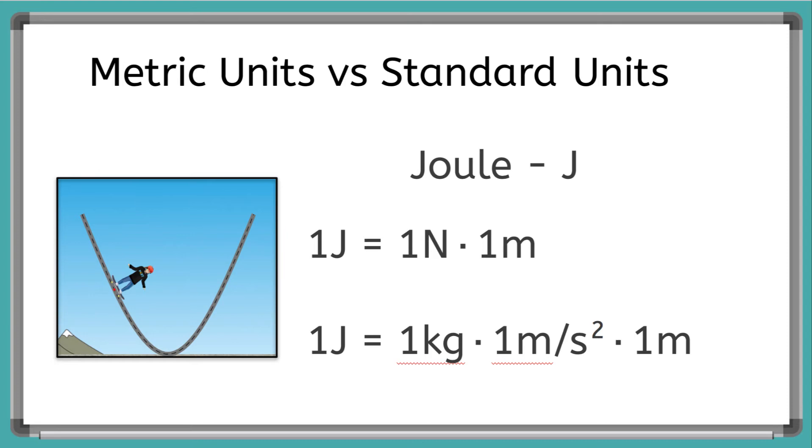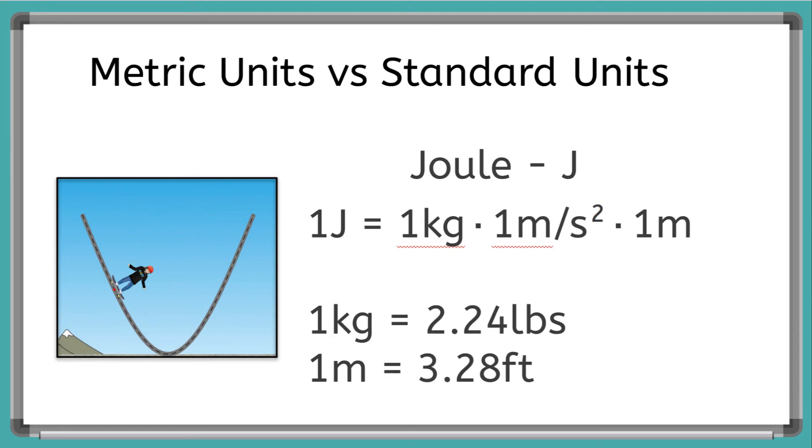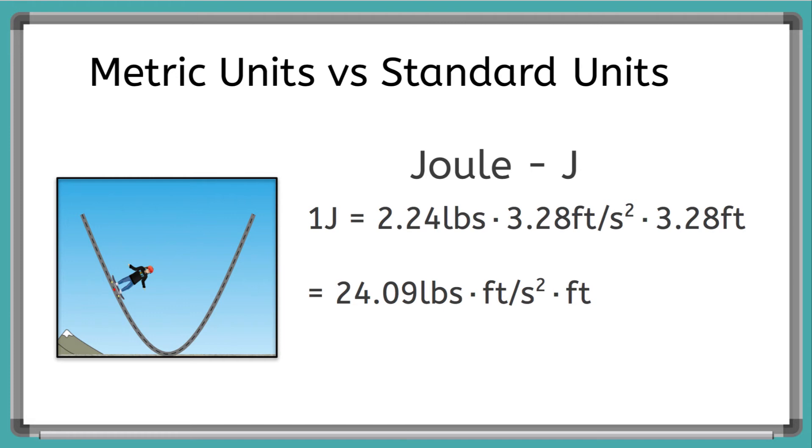But what happens if we convert those metric units to standard units? Remembering our conversions from earlier in the video, one kilogram is equal to 2.24 pounds, and one meter is equal to 3.28 feet. So let's plug those in. One Joule is equal to 2.24 lbs times 3.28 ft/s² times 3.28 ft, which is equal to 24.09 lbs·ft/s²·ft. And all of that equals one Joule. We see how using our metric system is all ones, and it makes that math really easy. Instead of having to convert everything at the end back to see how many factors of 24.09 lbs·ft/s²·ft, we just have Joules immediately, so we don't have to convert it back to our energy unit.